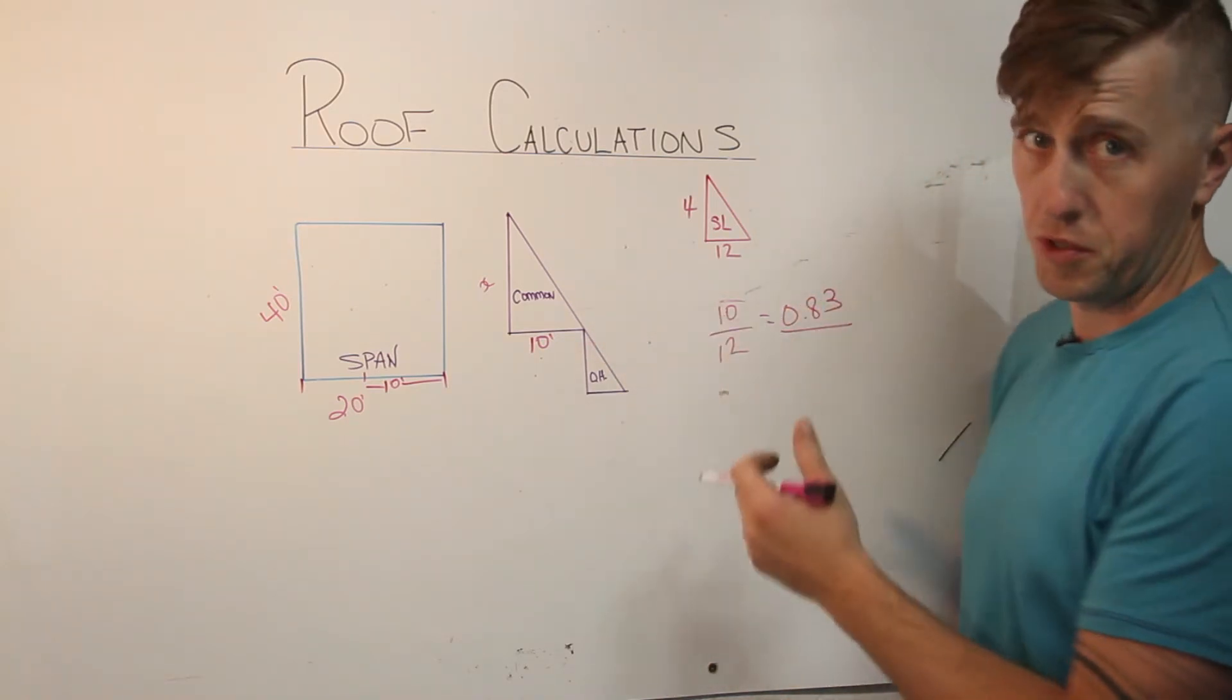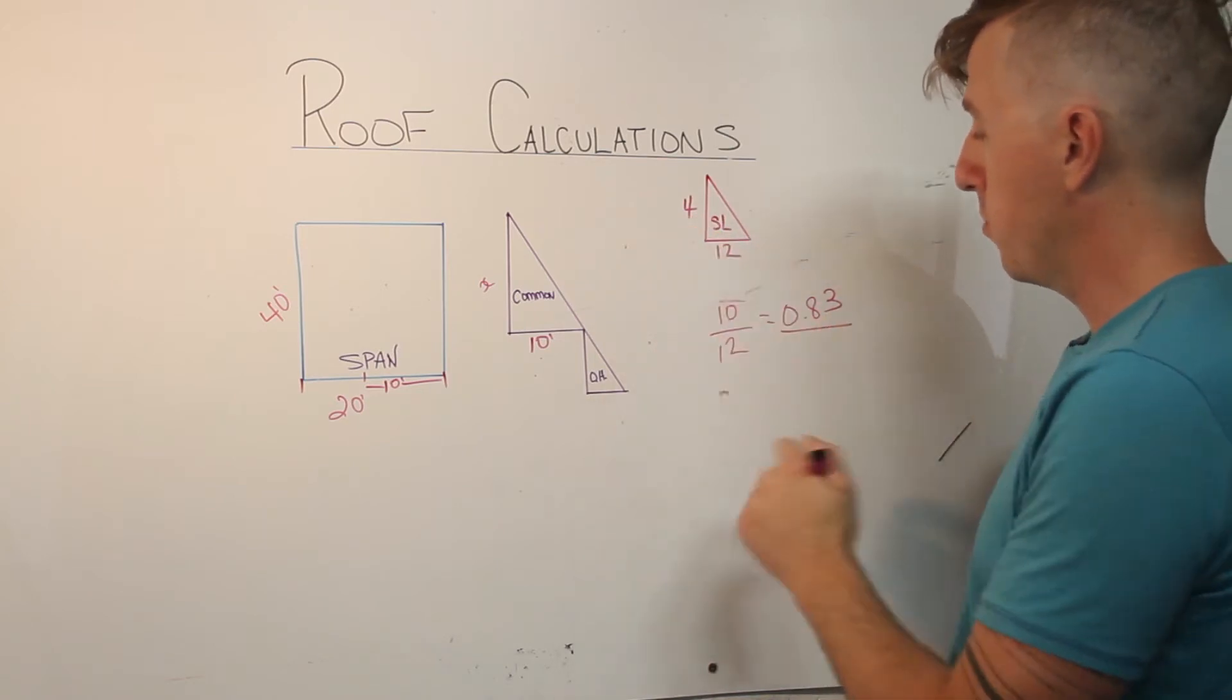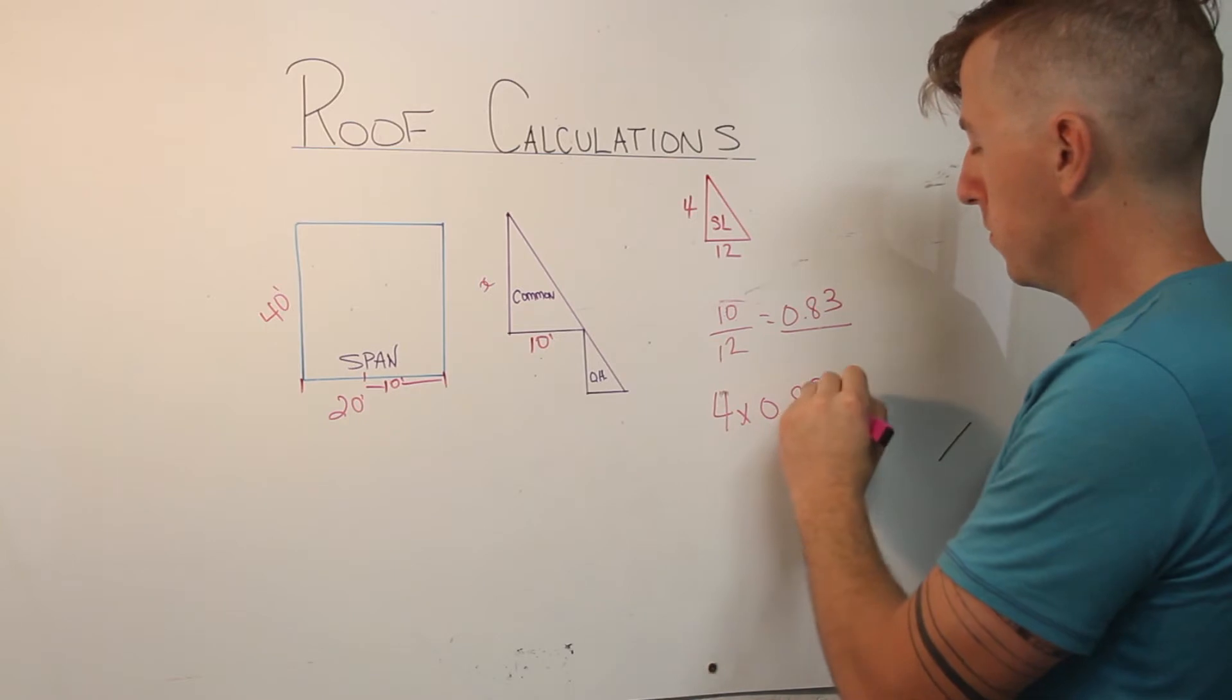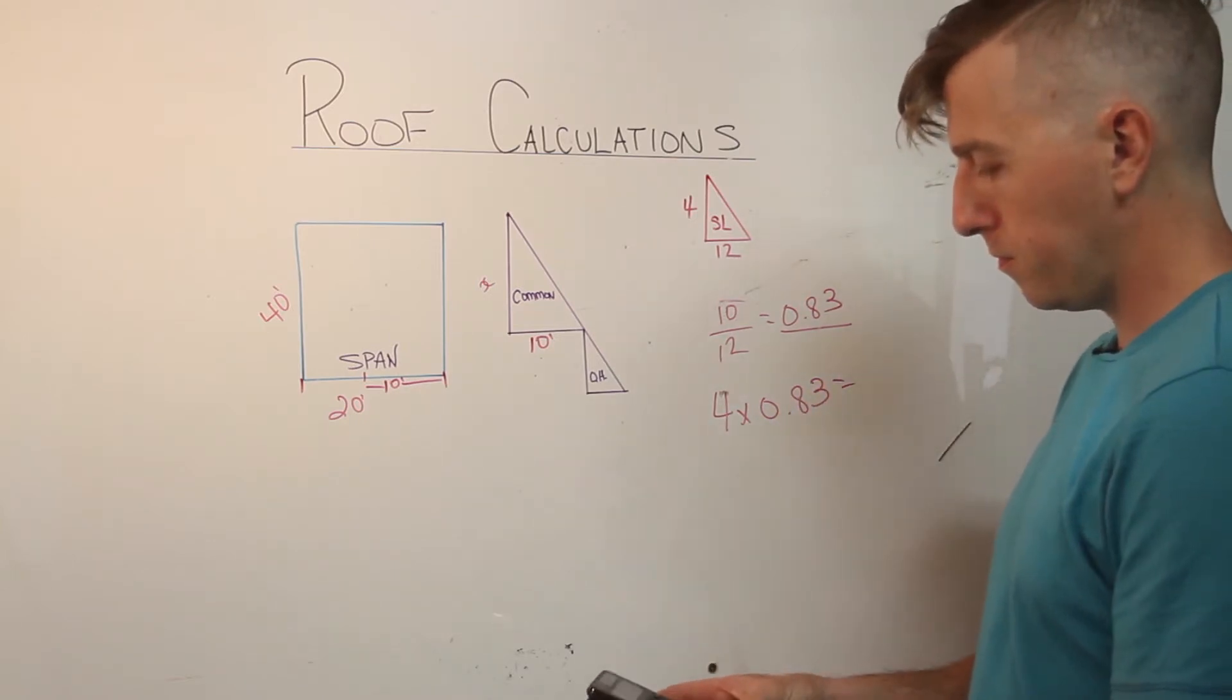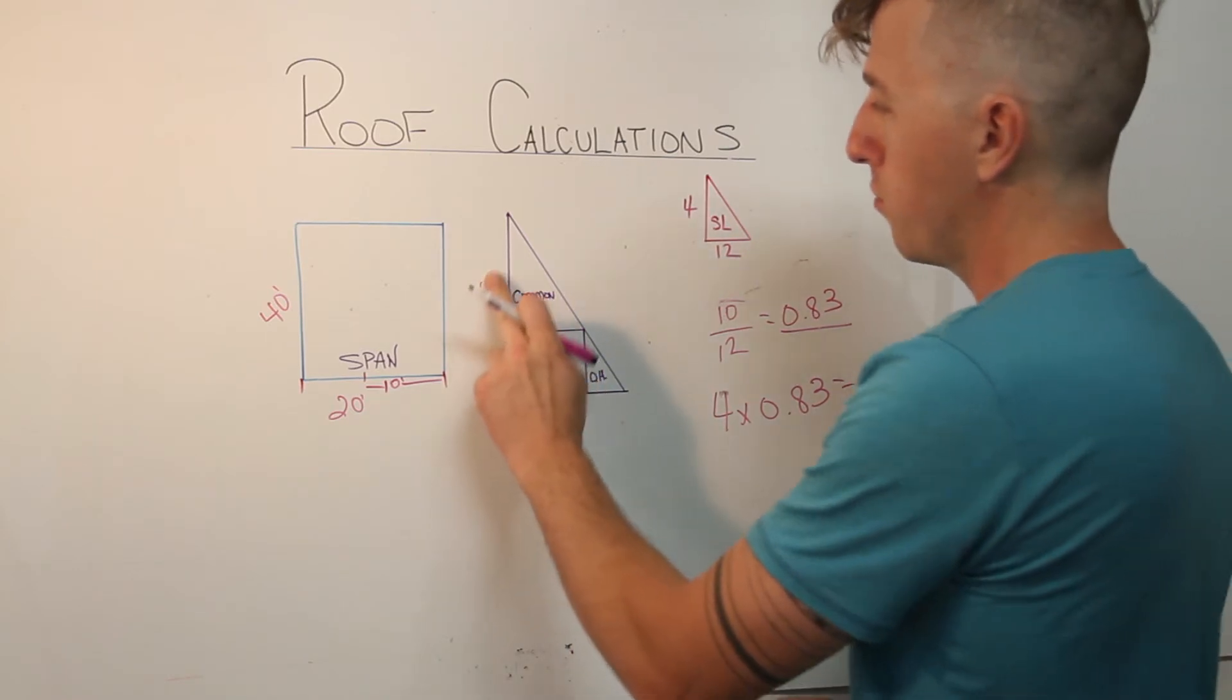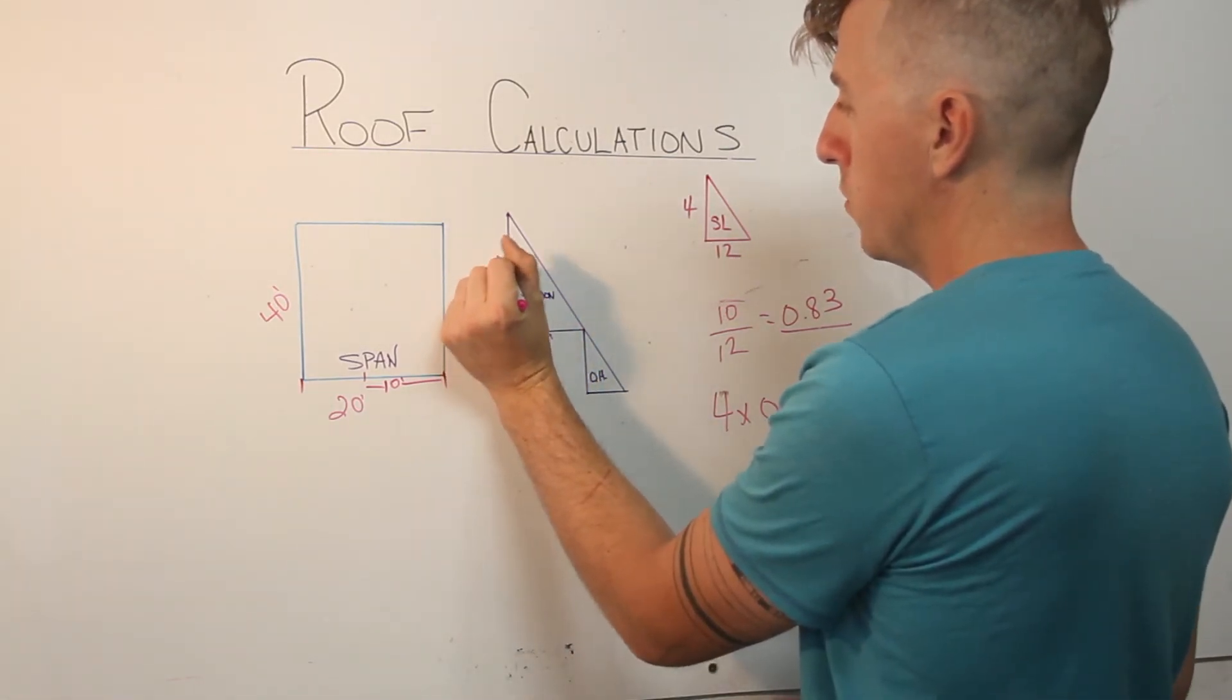So this is the ratio between these triangles. So if I multiply 4 times 0.83, my height is 3.32 feet.